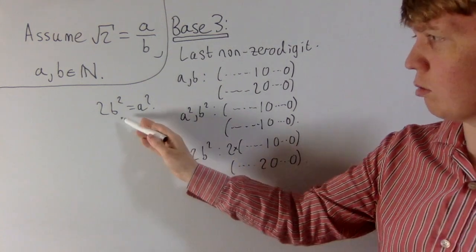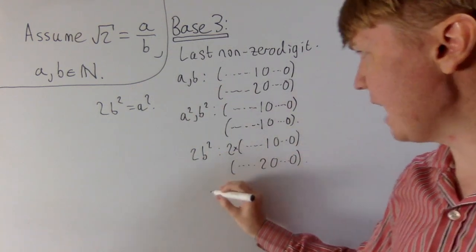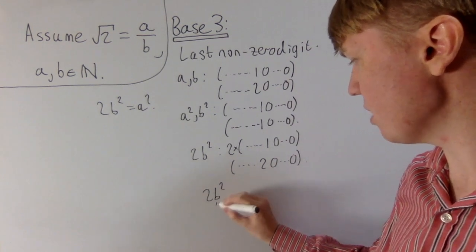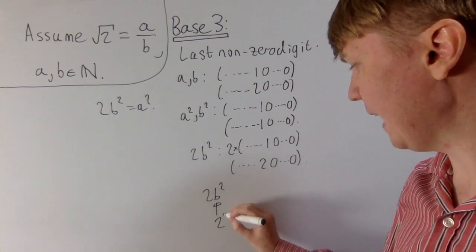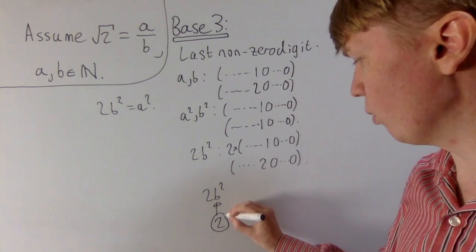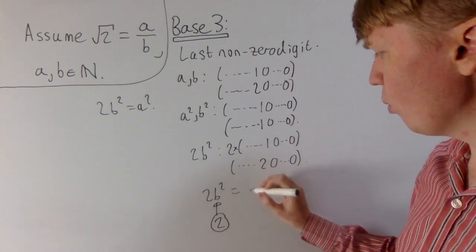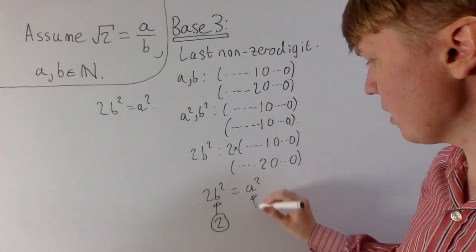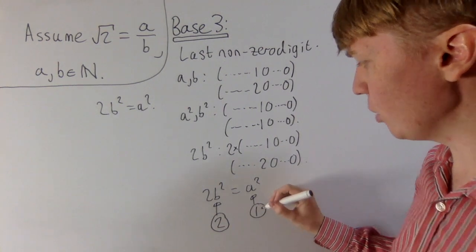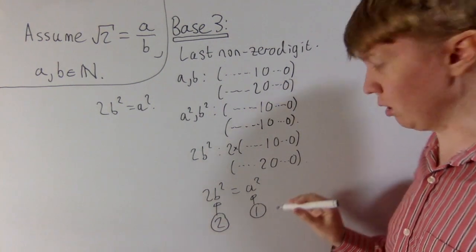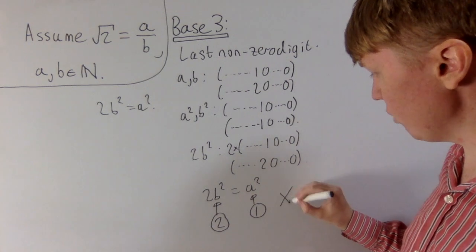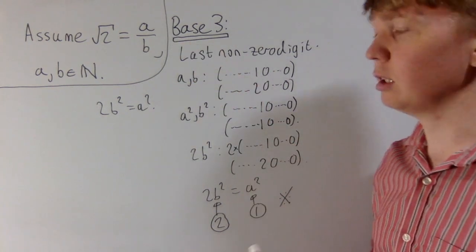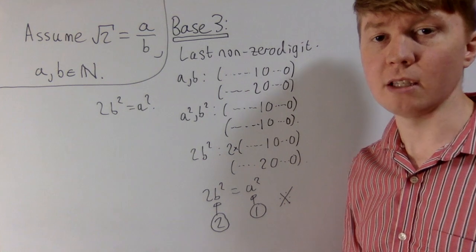So 2 times a square number — the last non-zero digit of this turns out has to be 2. But 2b² is supposed to equal a². The last non-zero digit of 2b² has to be 2 when written in base 3, whereas the last non-zero digit of a² has to be 1. This is a contradiction, and therefore we've shown that root 2 is irrational.